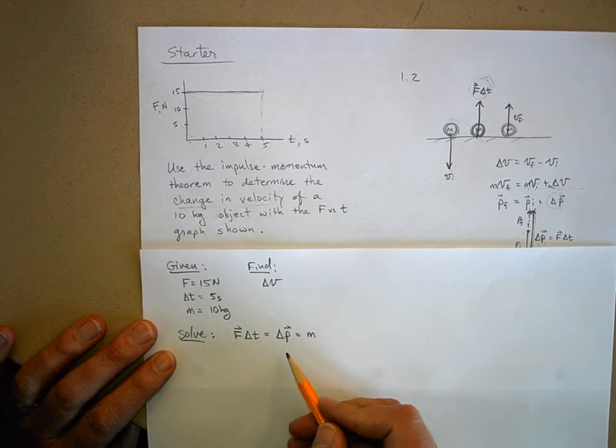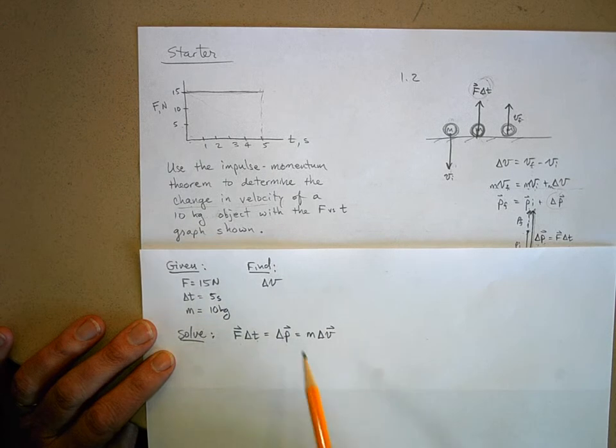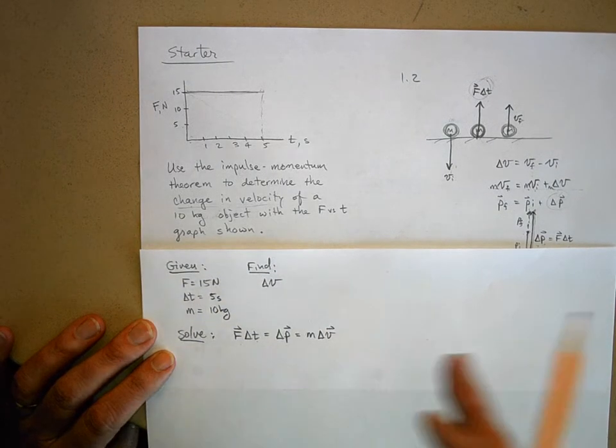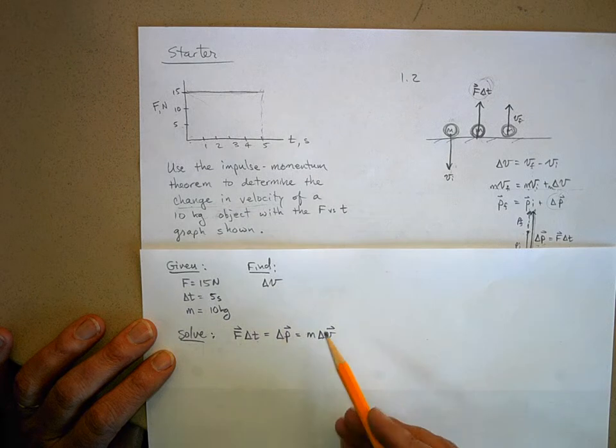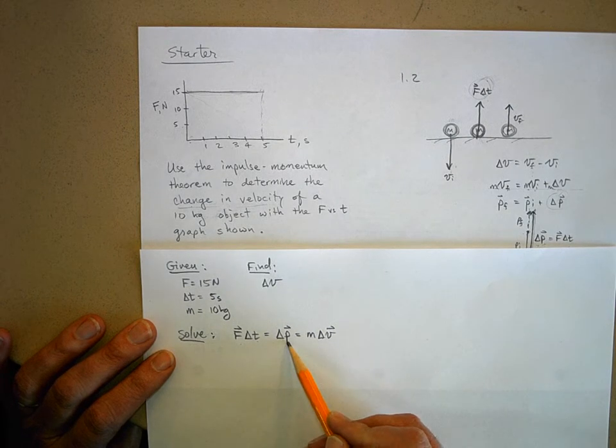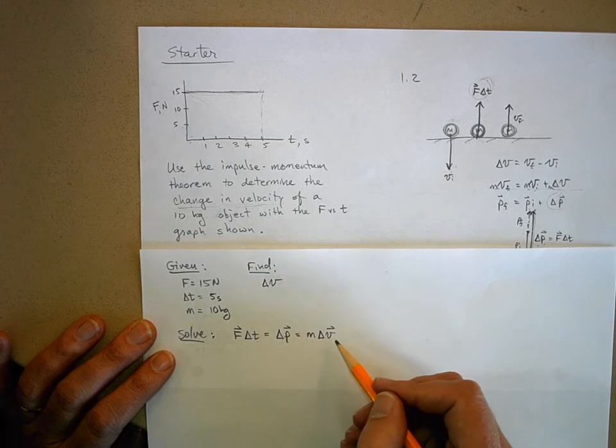Now, mass times a change in velocity is a change in momentum. So remember, the definition of momentum is an object's mass times its velocity. Well, that means that a change in momentum can be thought of as a mass times a change in that object's velocity. And this is what we're trying to find.